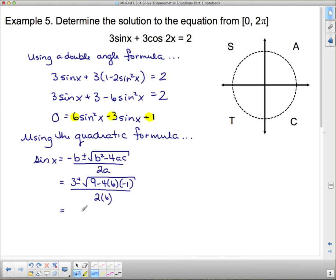So if you do all your work correctly, you're going to get 3 ± √33 divided by 12, which in turn, when you plug into your calculator, is going to give you 0.729.